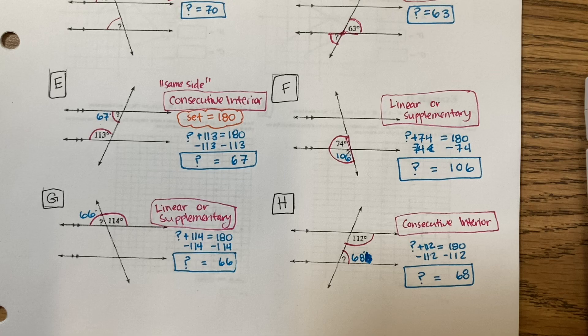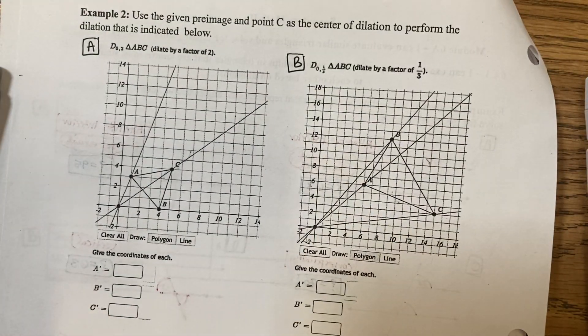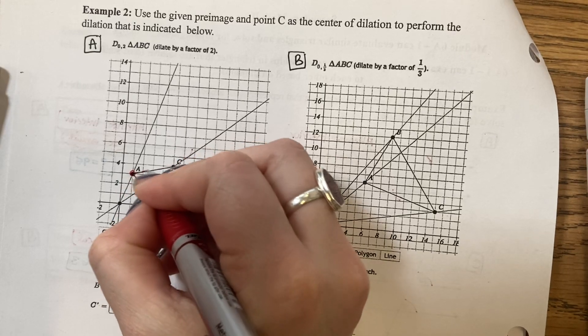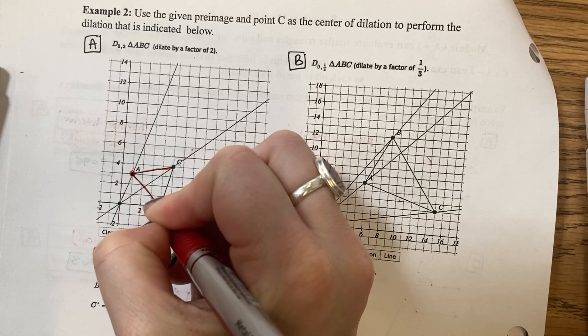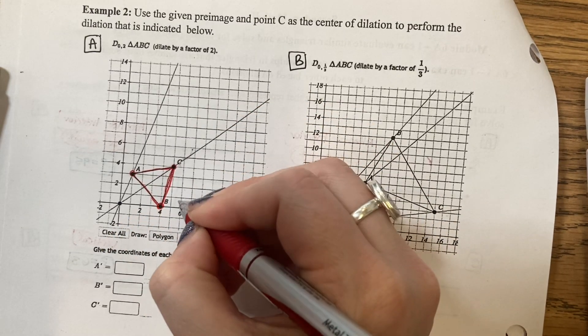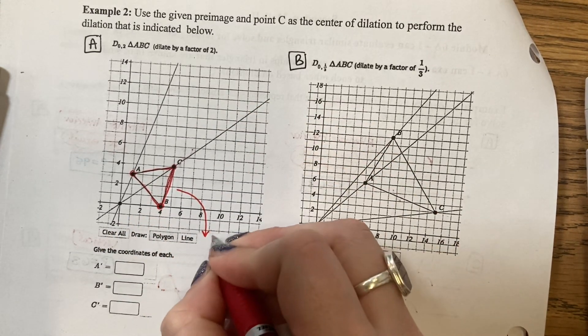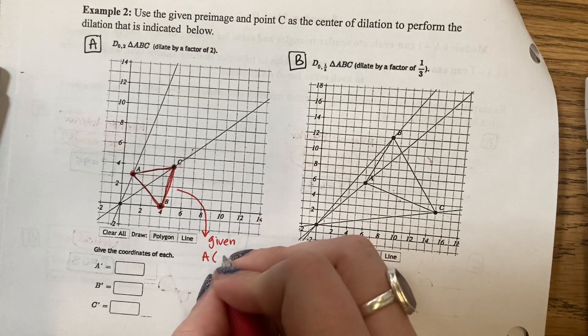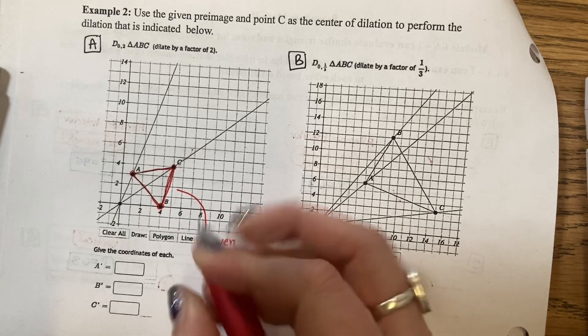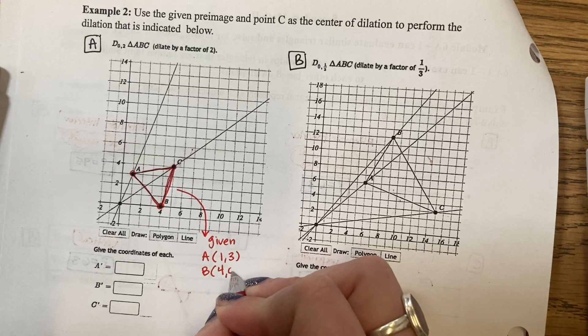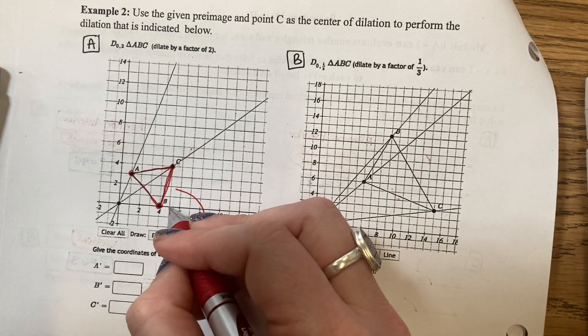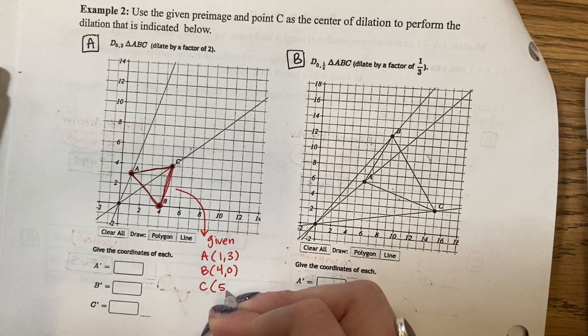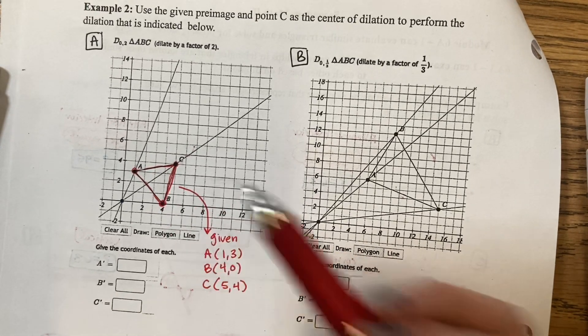Next page. Dilation. We are given triangle ABC. A is at 2, 4. B is at 0, 5. And C is at 4, 1. That's the location of the coordinates for the given triangle.